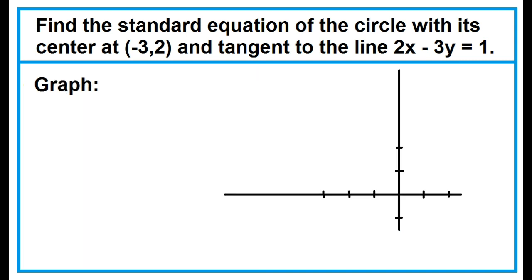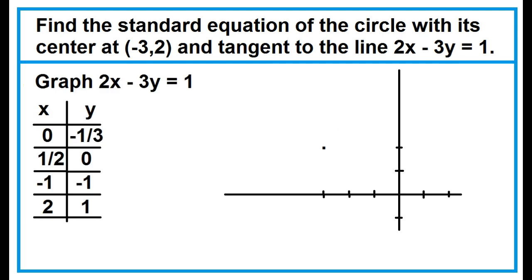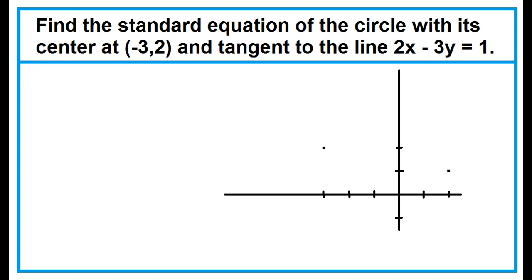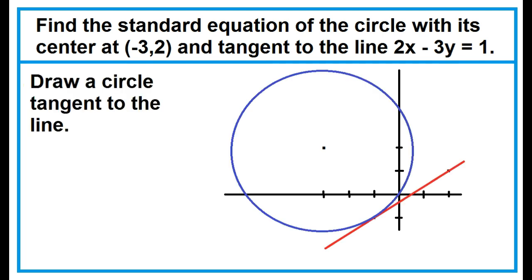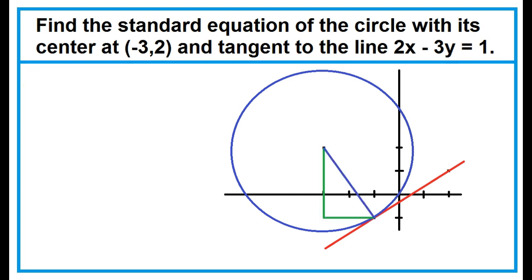To find the solution, sometimes it helps to graph. The center is at negative 3, 2. Graph 2x minus 3y equals 1: when x equals negative 1, y equals negative 1; when x equals 2, y equals 1. Plot the points, connect them, and draw a circle that intersects a point on the line. Connect the center and the point of tangency, then find r and r squared.